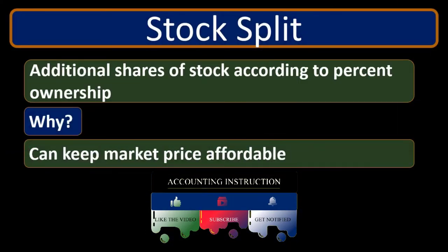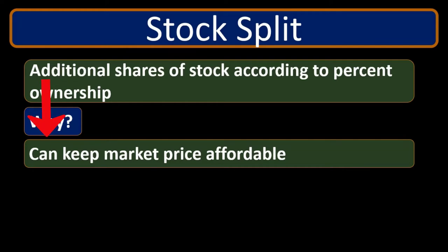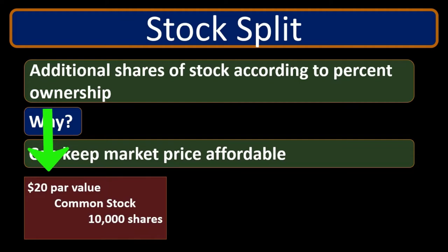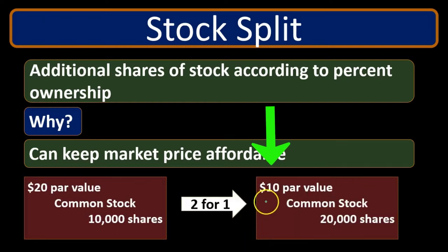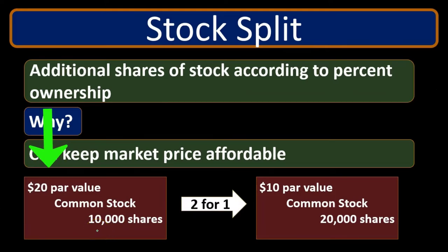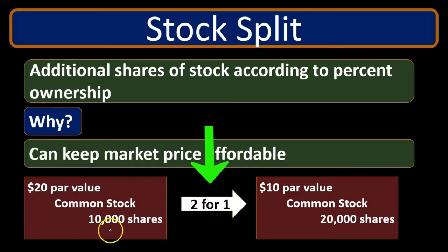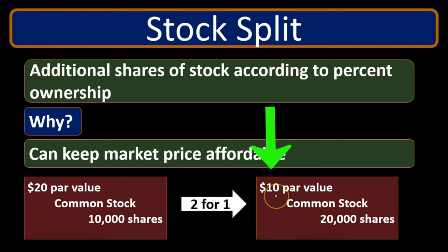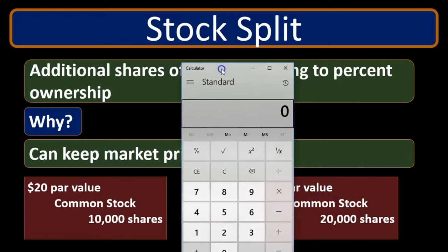The price of the stock could go down, making the market price possibly more attractive to investors. For example, if we had a $20 par value common stock and 10,000 shares outstanding, then with a two-for-one stock split, the par value would go down to $10 and we would have 20,000 shares outstanding. Every person who had stock prior to this had some of the 10,000 shares with a par value of $20. After the two-for-one split, if they had one share they now have two, so there are 20,000 shares and the par value is split in half to $10.